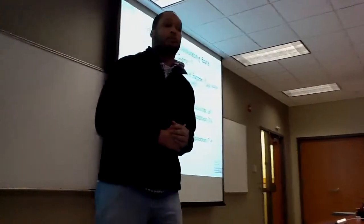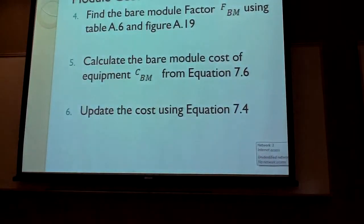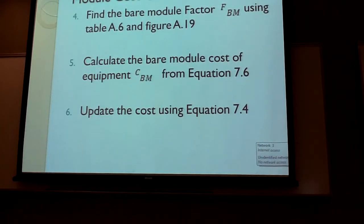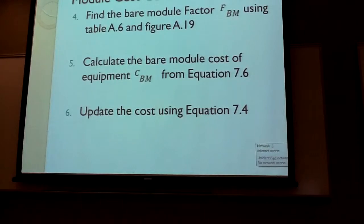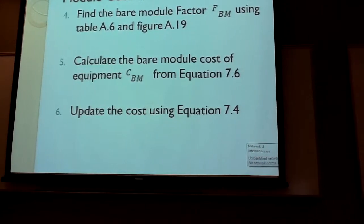Next, you would find your bare module factor F sub BM. This is done by using table 8.6 and figure 8.19. Then you would calculate your bare module cost C sub BM from equation 7.6, and then update that cost using equation 7.4.